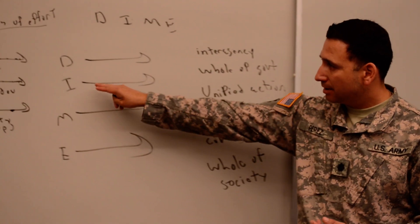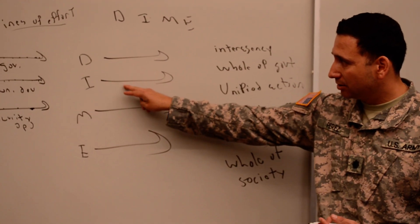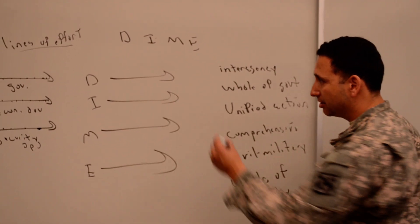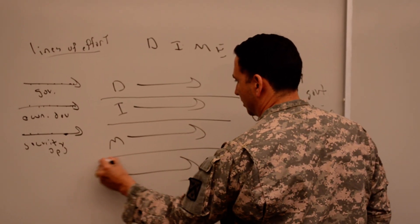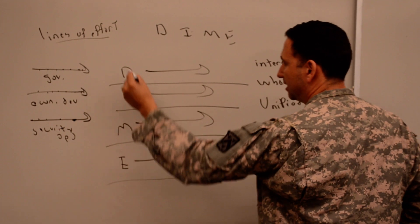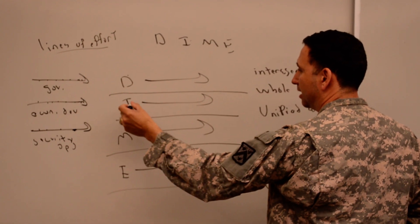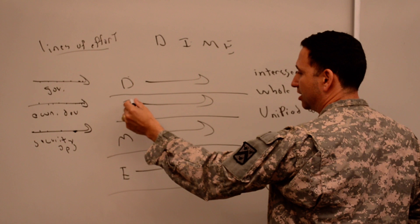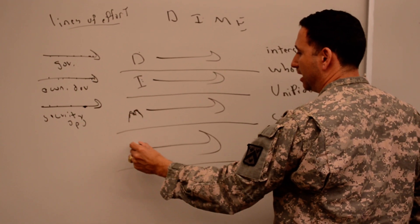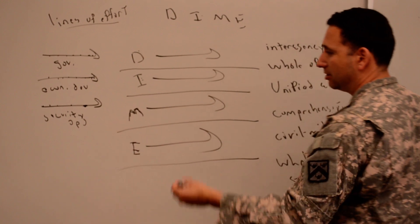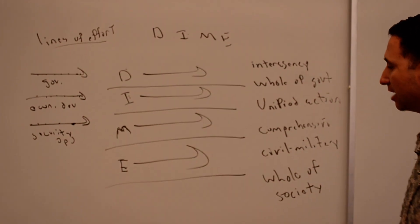When we use DIME, the DIME framework to label our lines, what we essentially do is create silos between each of these. So we'll say something like state and USAID are here, state and USAID and the administration are here. We'll say that the military focuses on this one, and economic development, say USAID and other members of the international community.